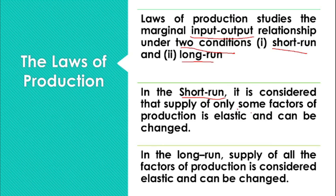In the short run it is considered that the factors of production cannot be changed. When we look at it, we find that there might be one or two factors of production that can be changed, but all of the factors of production cannot be changed. That is where we will have a different kind of law of production in the short run period.